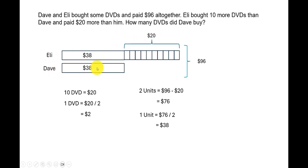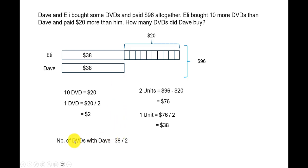We know that Dave spent $38 and the cost of 1 DVD is $2. To find the number of DVDs Dave bought, number of DVDs = 38 divided by 2, which equals 19. So Dave bought 19 DVDs.